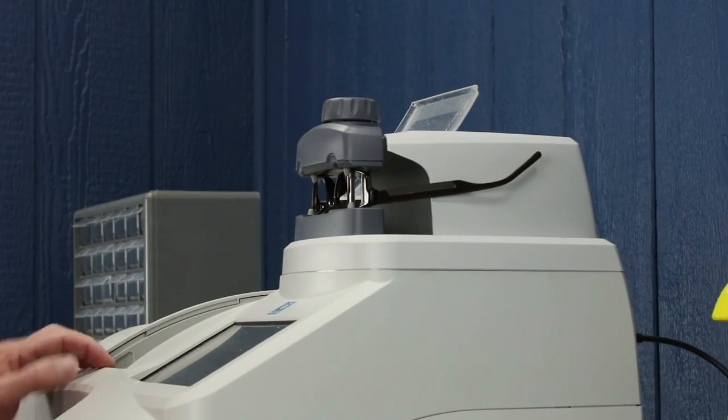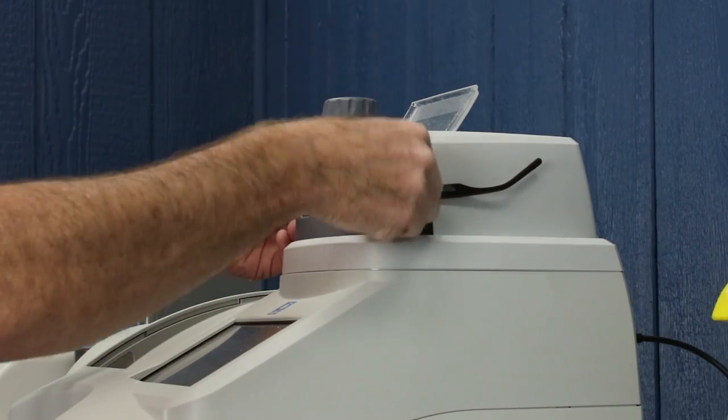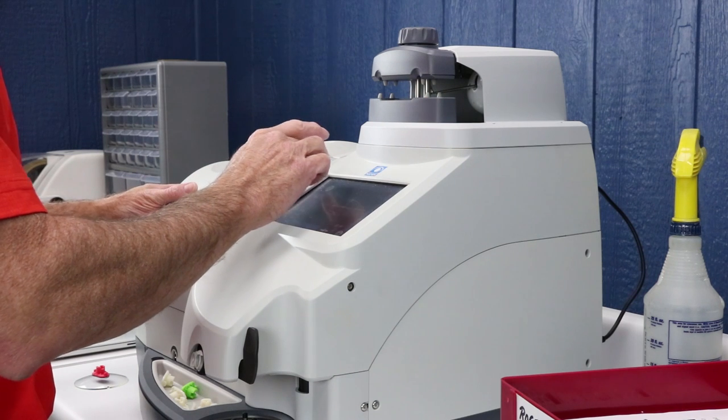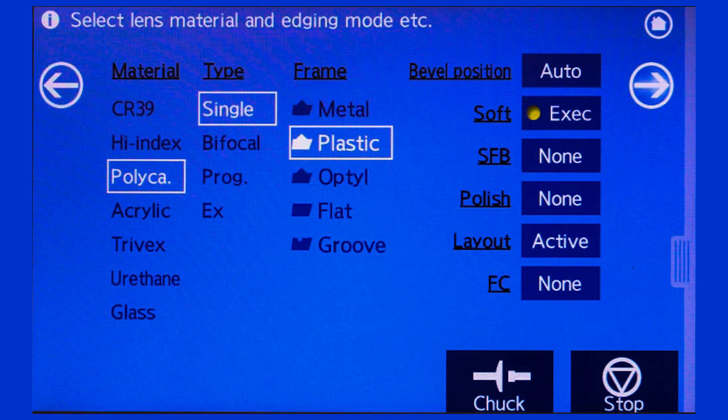Your frame is now finished tracing, so you can set it to the side and begin the data entry process. First screen is simply a confirmation. Make sure that you've got the right trace, right shape. The next screen is where you'll choose the actual lens material, the lens type, frame type, and any edge or settings like soft, safety bevel, polish, layout.